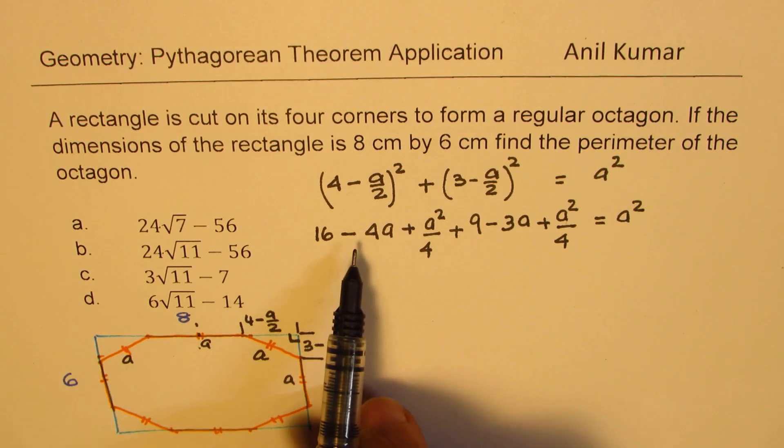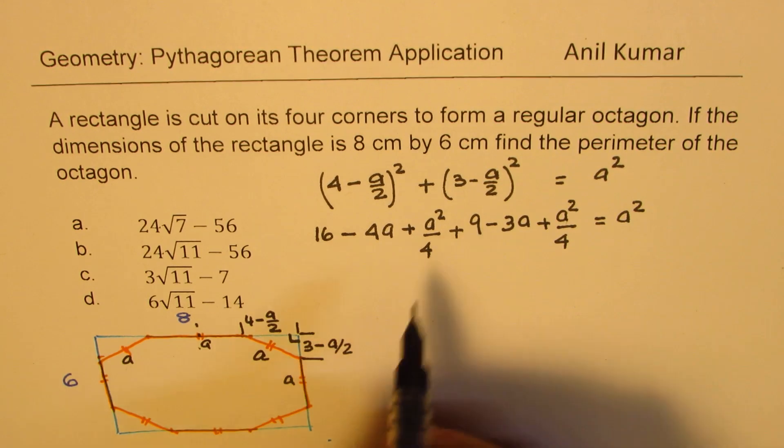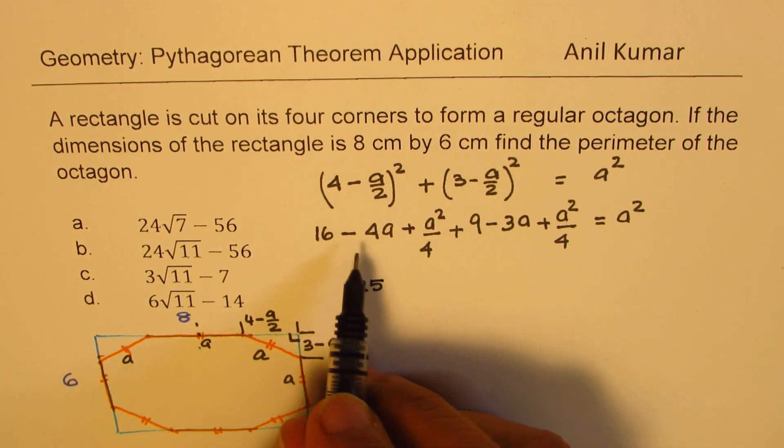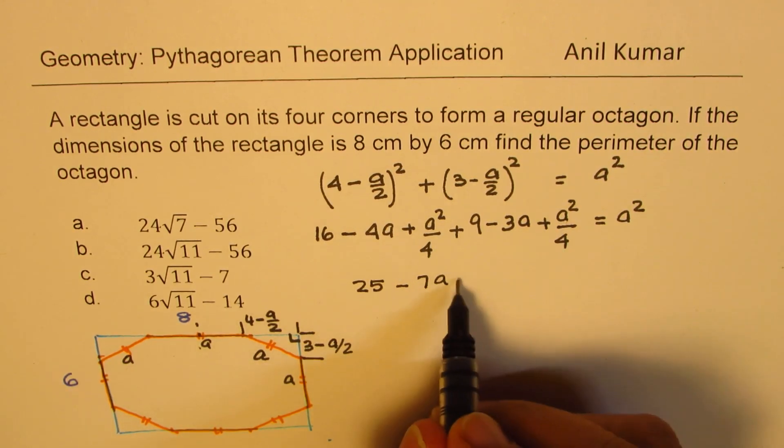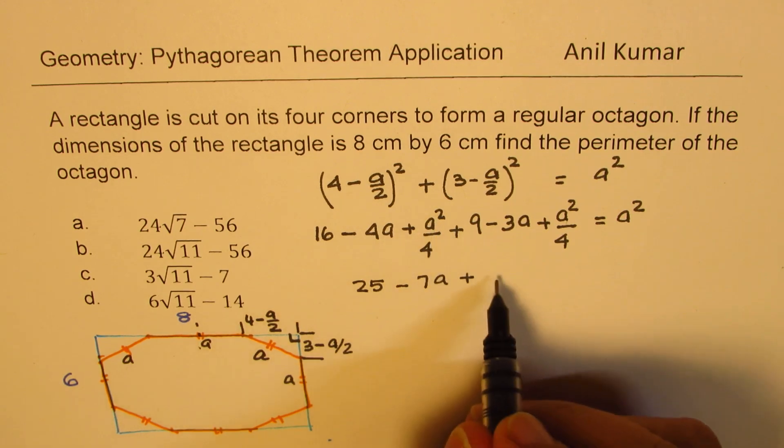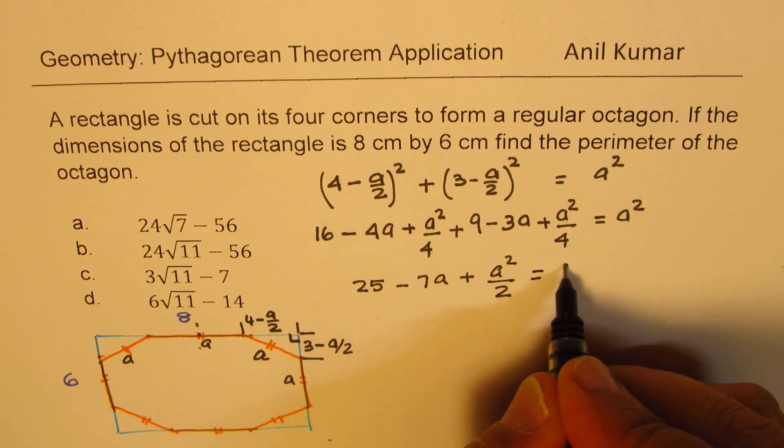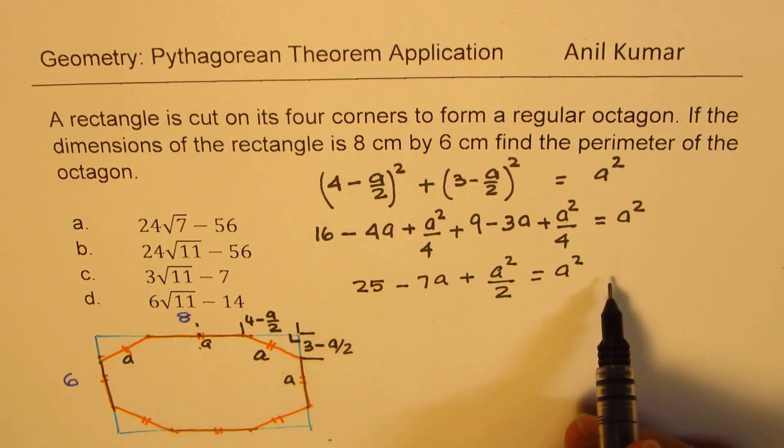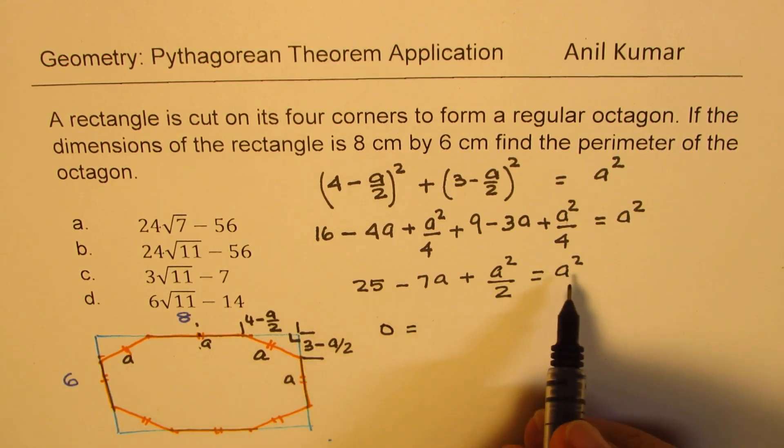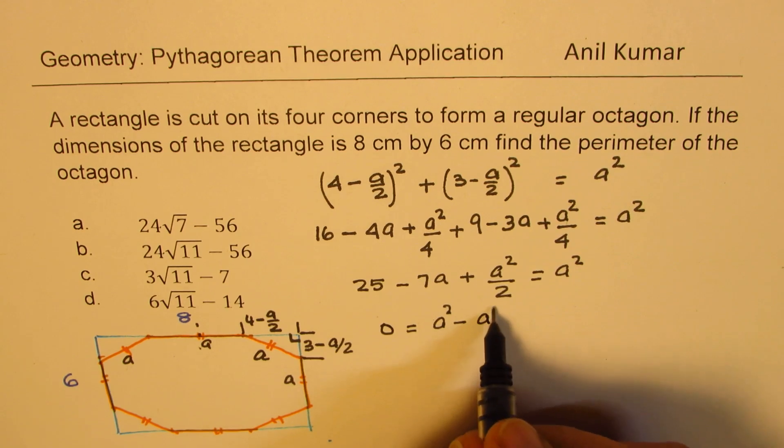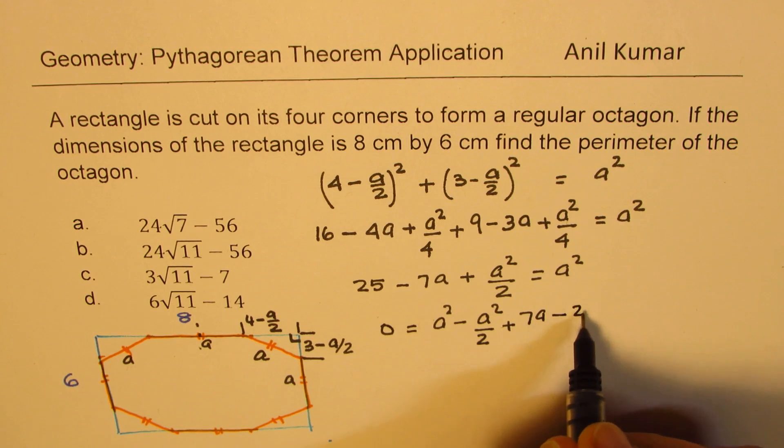So simplifying by combining the like terms, we get 16 plus 9 is 25 minus 4A minus 3A is minus 7A. A square over 4 plus A square over 4 means 2A square over 4, or half of A square, and that should be equal to A square. Now we can take all the terms to the right side and then solve. We get a quadratic equation.